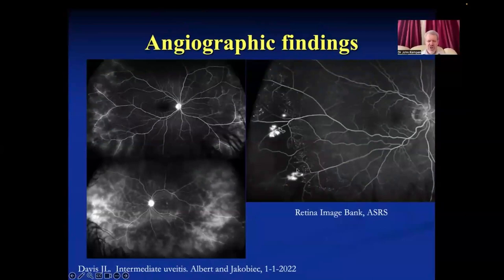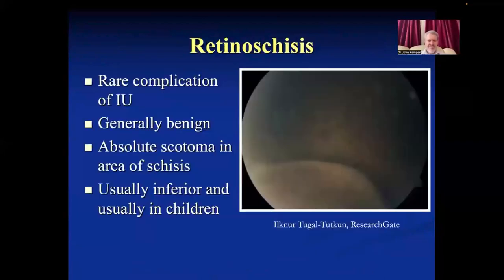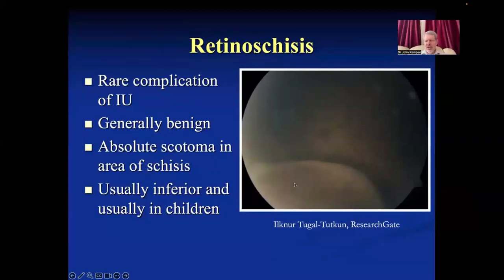Angiography can demonstrate extensive leakage, and peripheral neovascularization can occur. The incidence of cataract is substantial but less than with anterior uveitis, probably because patients aren't receiving topical steroids as commonly. About a third of cases develop cataract within 10 years, which may be partly avoided with systemic therapy. Retinoschesis is a rare complication, generally static, usually occurring inferiorly and typically in children.